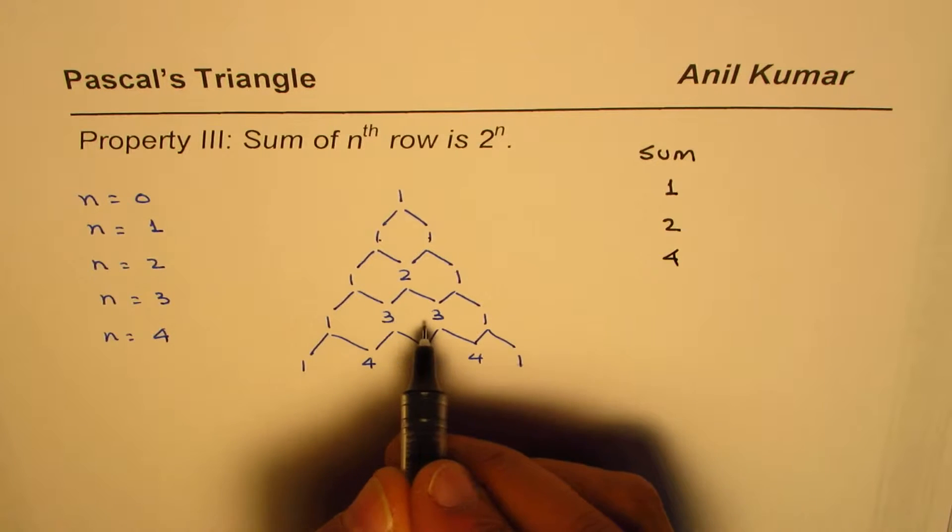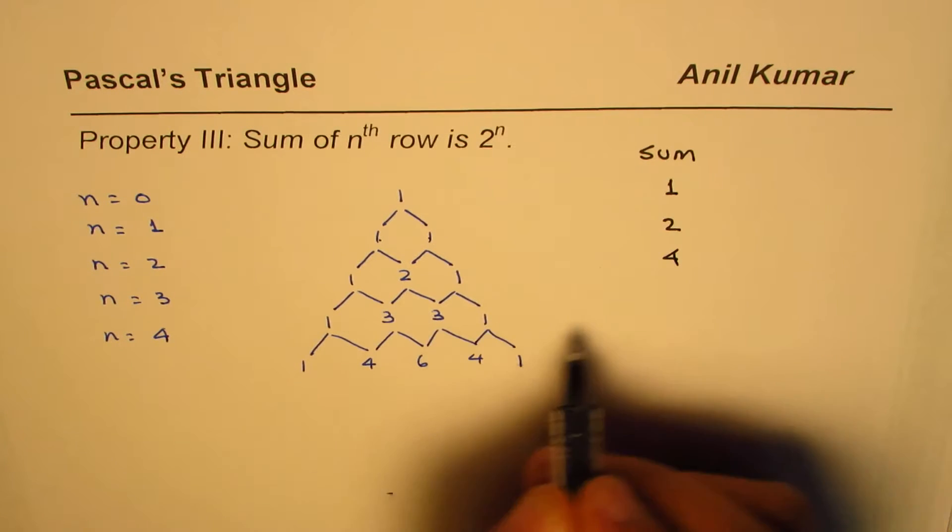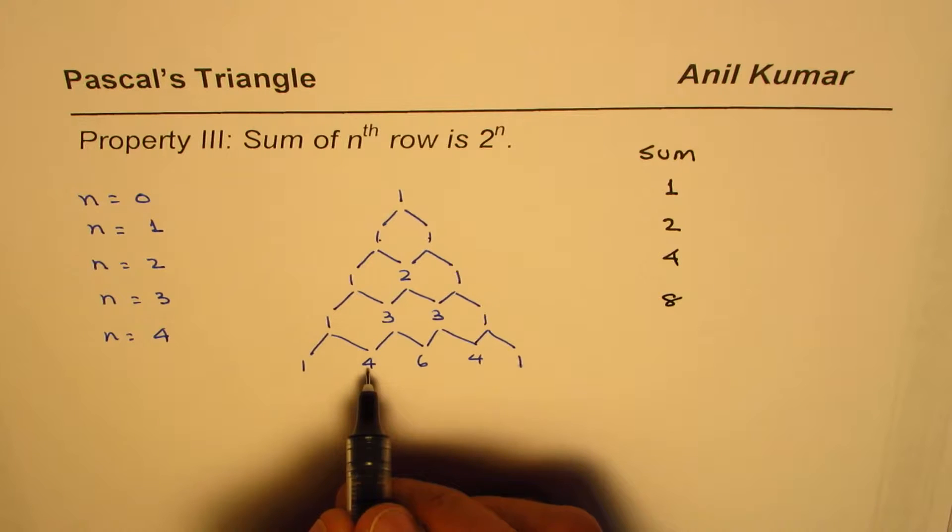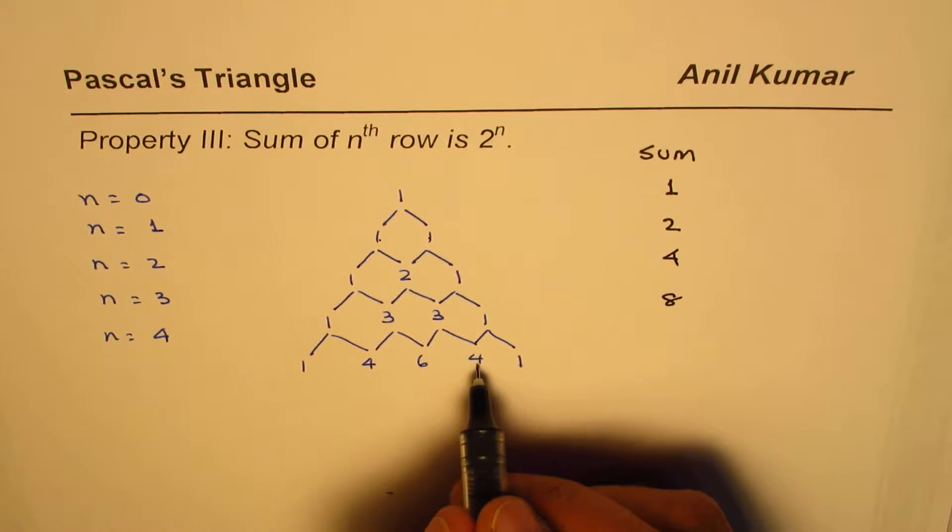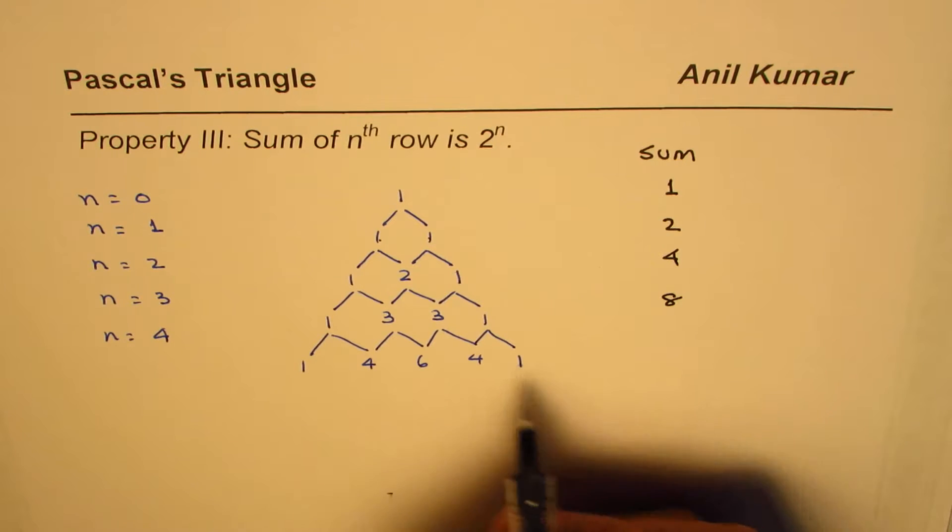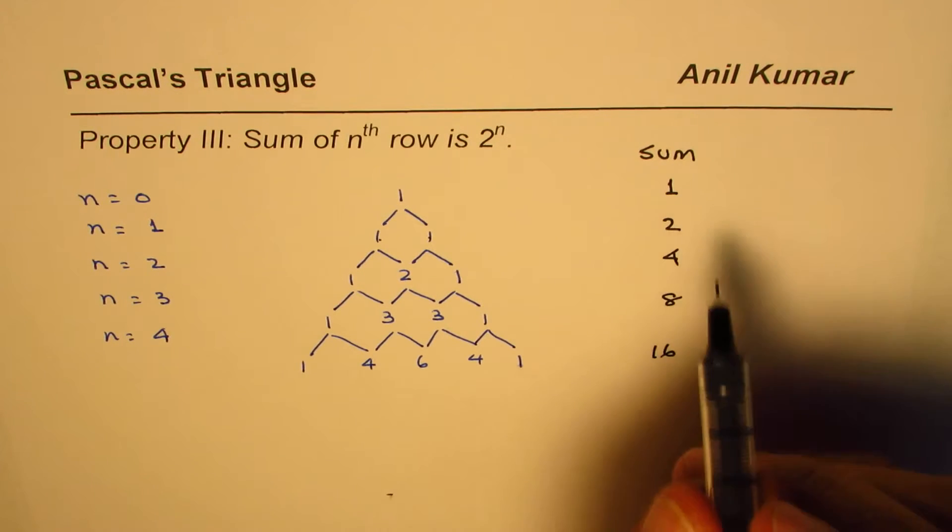1 plus 3 is 4, 4 plus 3 is 7 and 1, 8. 1 plus 4 is 5, plus 6 is 11, plus 4 is 15, and then 1 is 16.